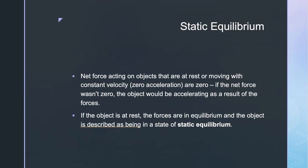These techniques are useful for analyzing an object that is at rest or moving with constant velocity — that is, zero acceleration. In each of these cases, the external forces acting on the object are in equilibrium and result in a net force of zero. If the net force weren't zero, the object would be accelerating. If the object is at rest, the forces are in equilibrium, and the object is described as being in a state of static equilibrium.